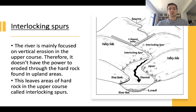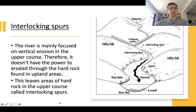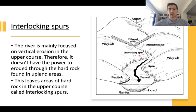The second feature is something called interlocking spurs. They sound quite complicated but they're not really. The river is mainly focused on vertical erosion in the upper course, so it doesn't have the power to erode through the hard rock found in upland areas. This leaves areas of hard rock in the upper course called interlocking spurs — these areas here. The river has had to wind in between them because it hasn't got the power to break through these areas of really hard rock.